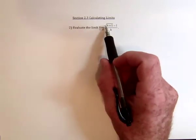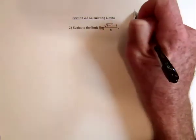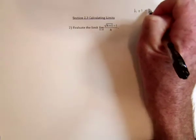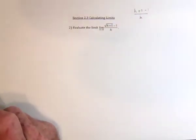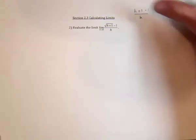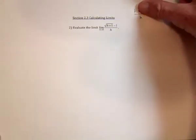Well, if we didn't have this radical, and we had just h plus 1 minus 1 divided by h, then the ones could cancel. And once the ones cancel, we would have h divided by h, which is equal to 1.